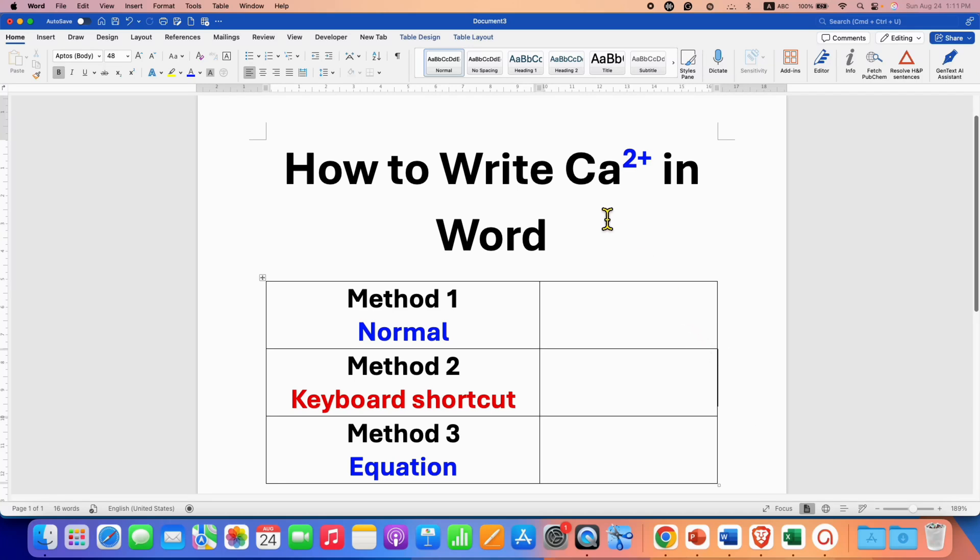In this video, you will see how to write Ca2+ in a Word document. There are three methods total. The first two methods are used to type Ca2+ as normal text.